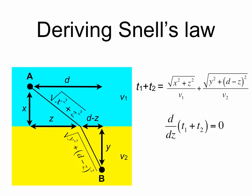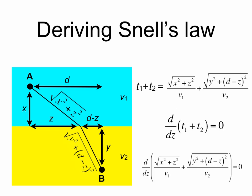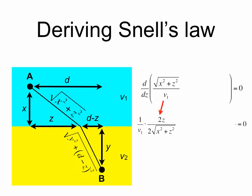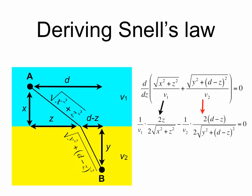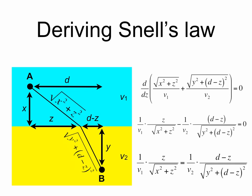Taking the derivative and setting it equal to zero: v1 is a constant so it comes out, and by the chain rule the derivative of the square root of x squared plus z squared is 2z over 2 times the square root of x squared plus z squared. The 2's in the numerators and denominators cancel. Moving terms to opposite sides leaves us with: 1 over v1 times z over the square root of x squared plus z squared equals 1 over v2 times (d minus z) over the square root of y squared plus (d minus z) squared.